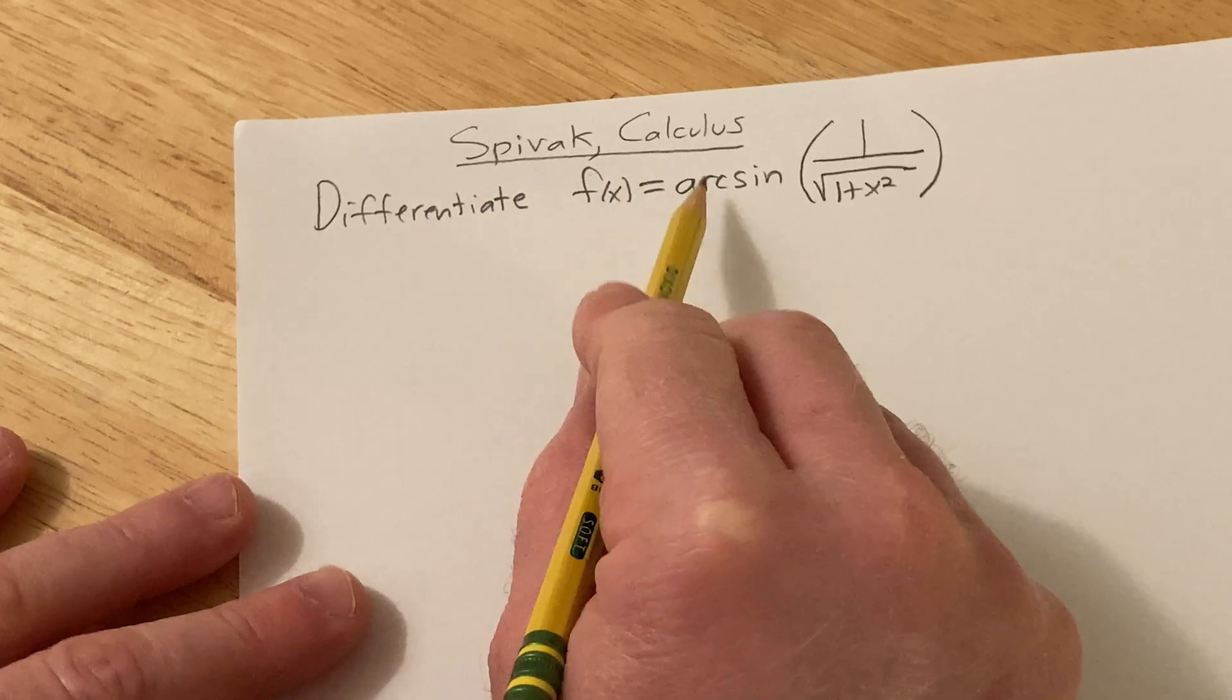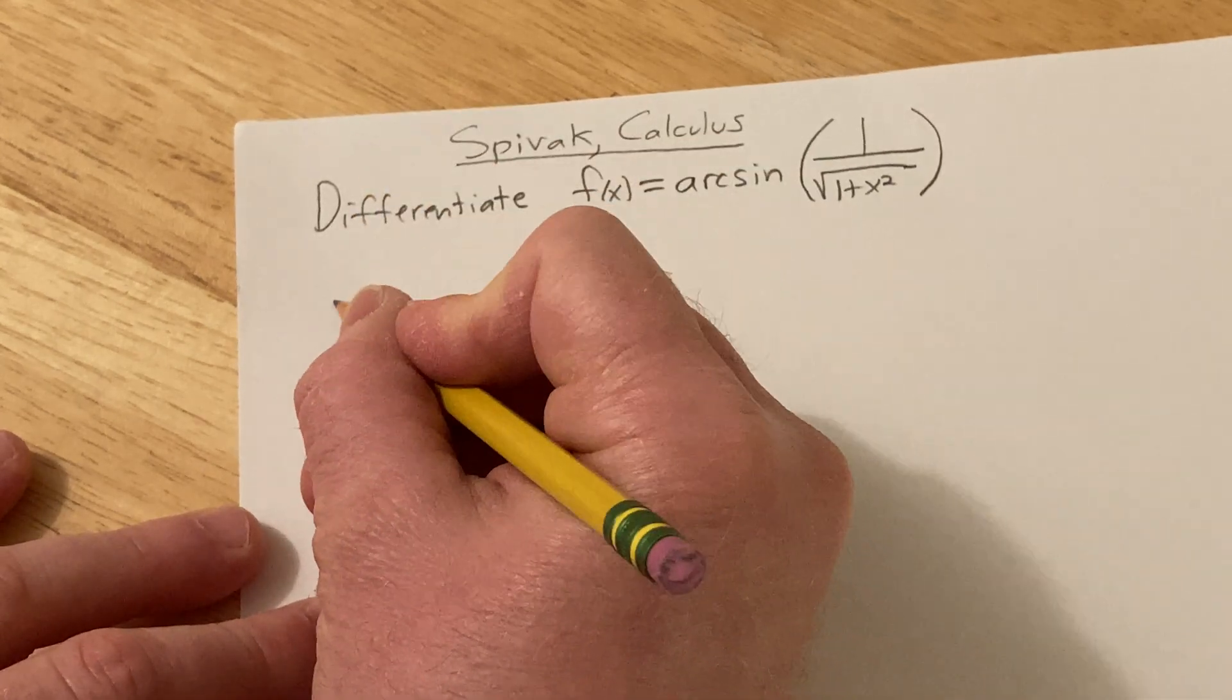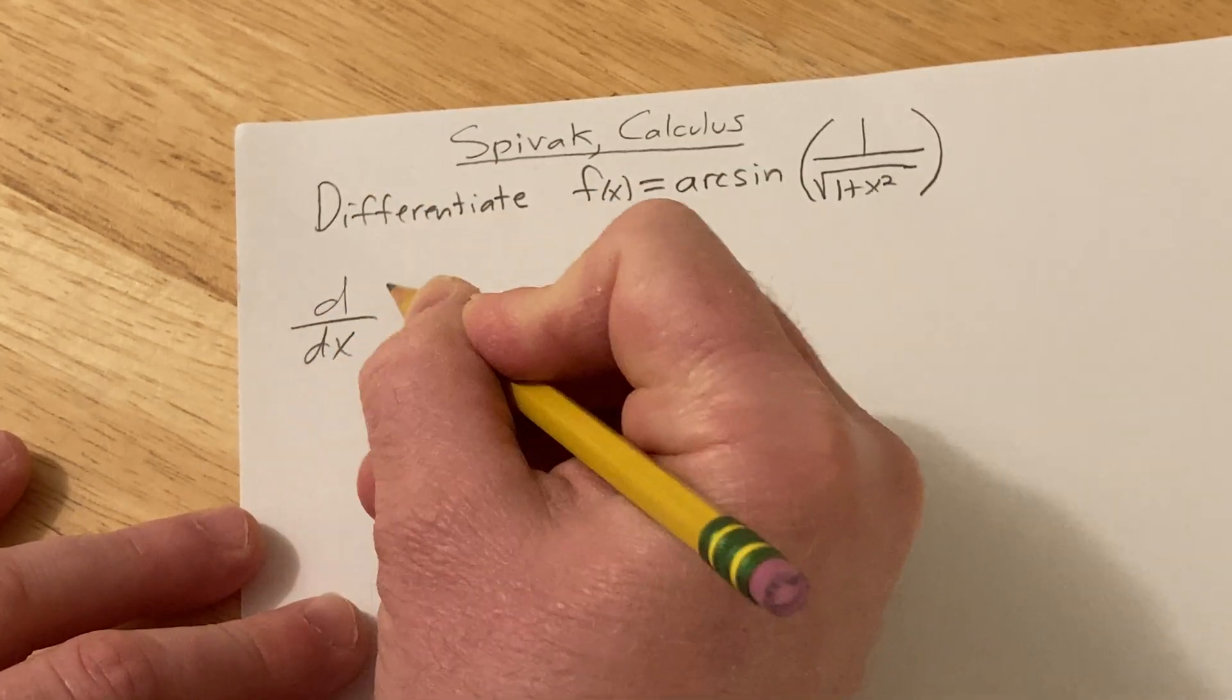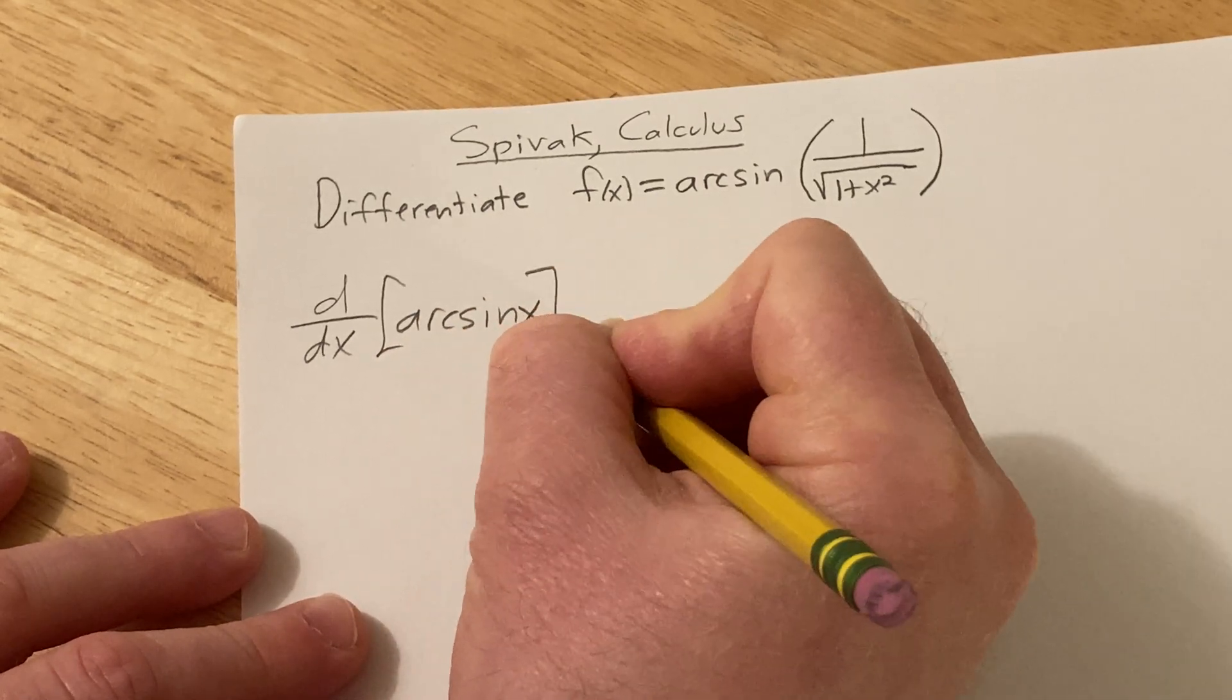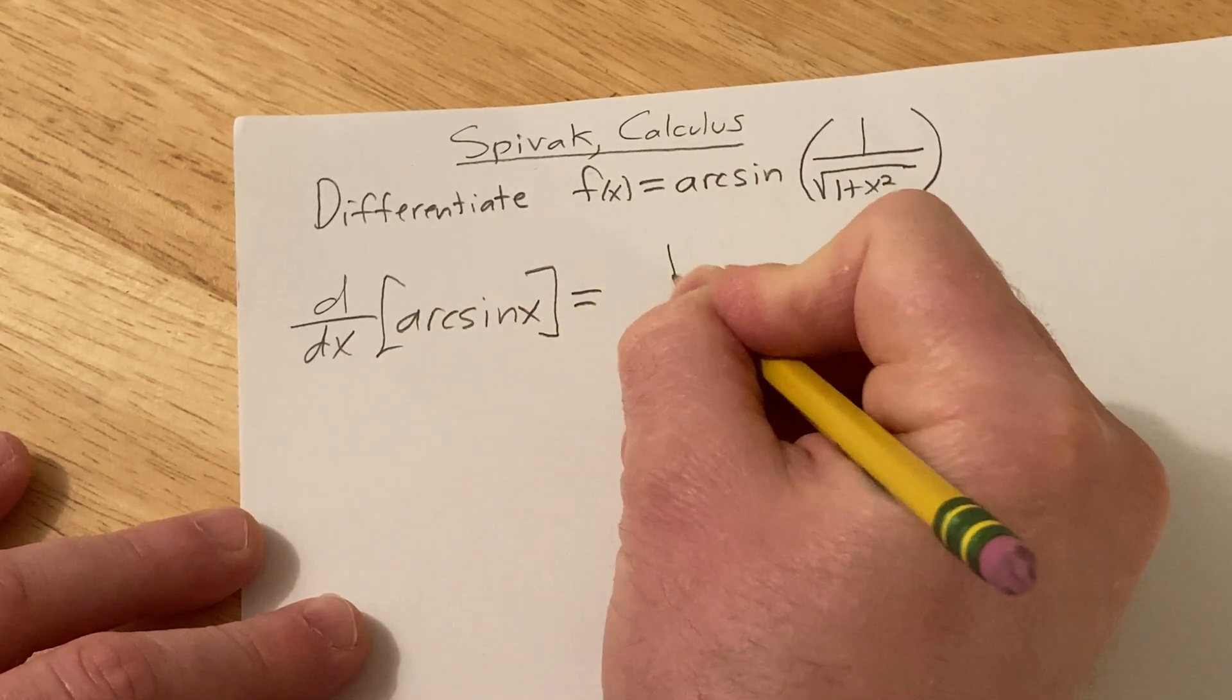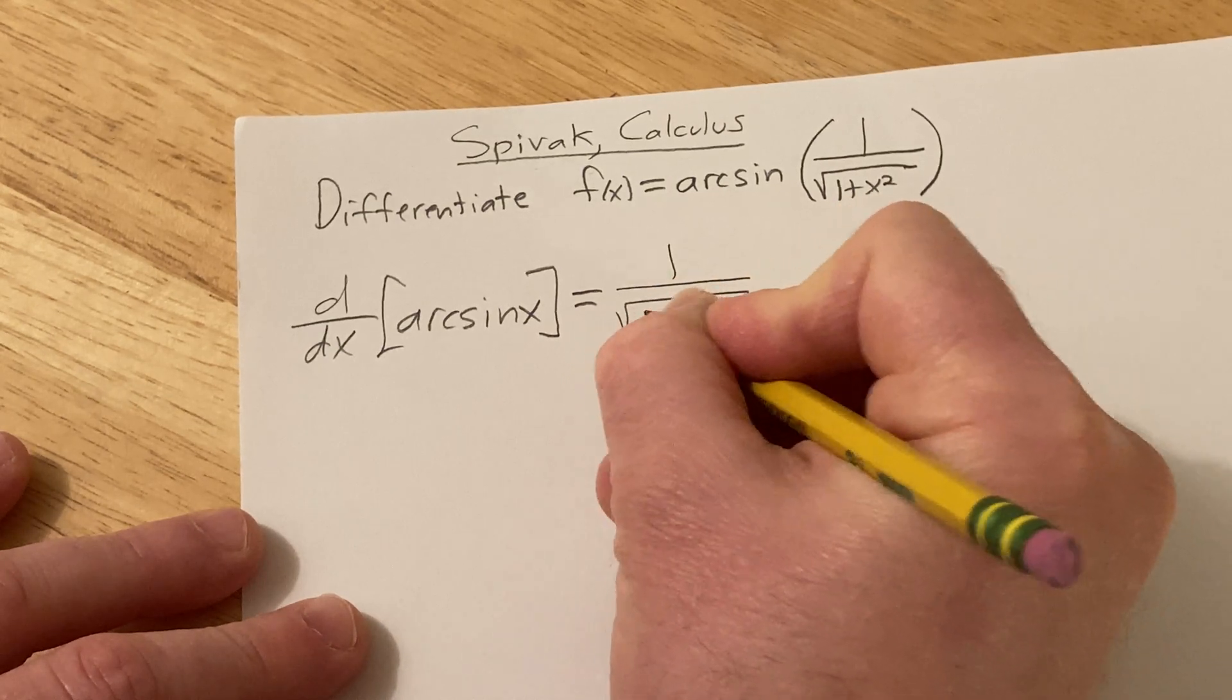Mainly let me just refresh your memory on what the derivative of arcsine is. So d/dx of the arcsine of x, that's equal to 1 over the square root of 1 minus x squared.